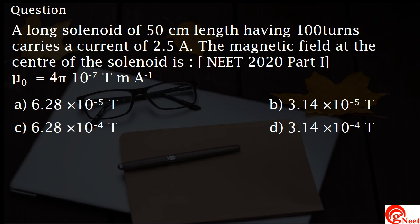This solenoid is 50 cm in length and carries a current of 2.5 Ampere with 100 turns. We will be using the formula for the magnetic field at the center of a solenoid, which is given by B = μ₀NI/L.